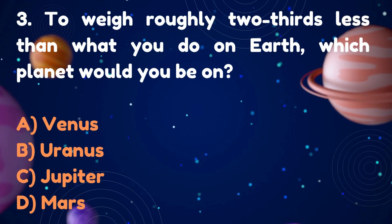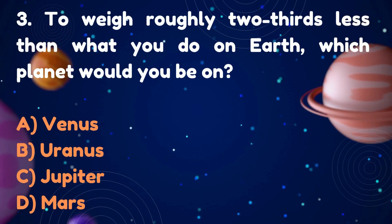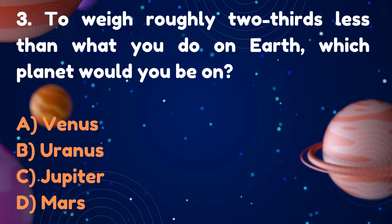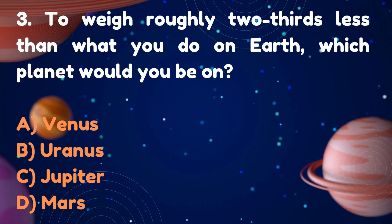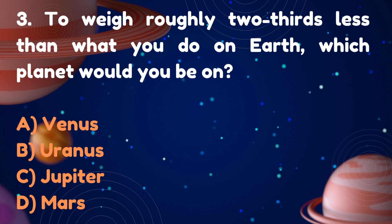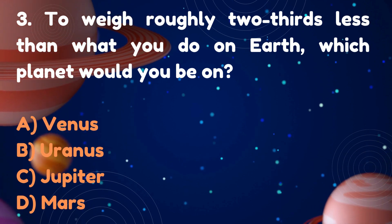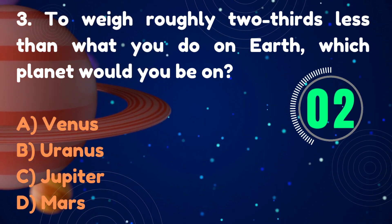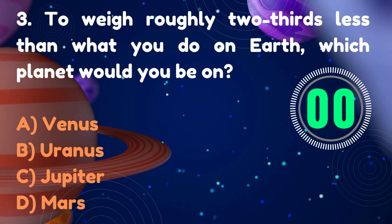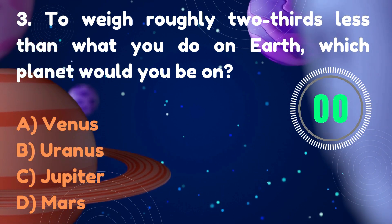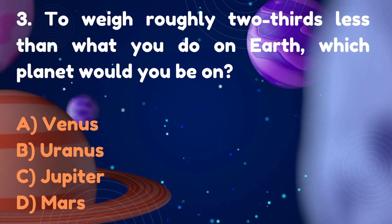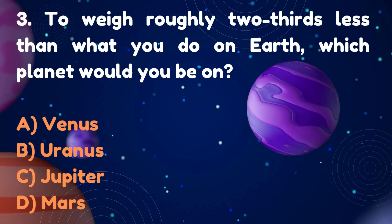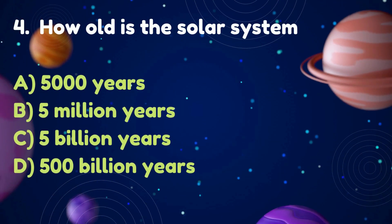To weigh roughly two times less than what you do on Earth, which planet would you be on? Options: Venus, Uranus, Jupiter, Mars. Answer: Mars.